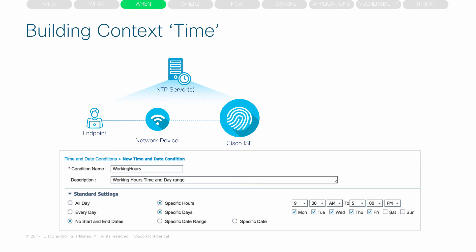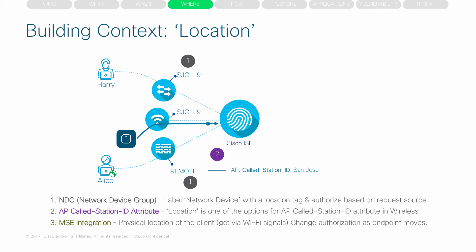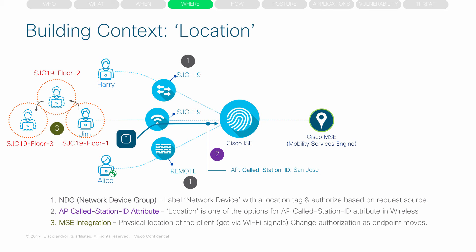WHEN — we can author time-based policies within ICE. WHERE — one simple way to determine location is to have a location label assigned to network devices and track where the authentication request is coming from. If it's coming from a switch labeled as a San Jose Building 19 location, we can apply specific policies. In a wireless network, the access point Station ID can be defined with the location name, telling us which location the wireless user or device is in. If you integrate ICE with Mobility Services Engine (MSE), we can track the actual physical location of the wireless endpoint as it moves.